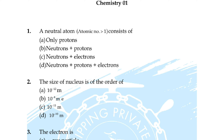Question number one: a neutral atom with atomic number one consists of — option A: only protons, B: neutrons plus proton, C: neutrons plus electron, option D: neutrons plus protons plus electrons. Correct answer is option D.